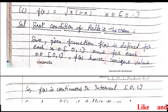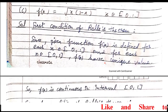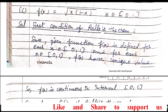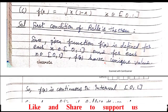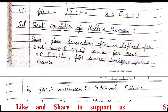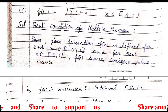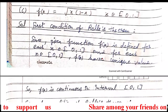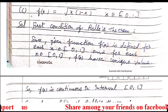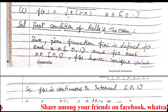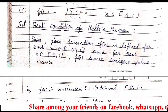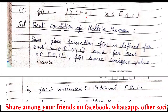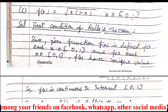Hello everyone. I am going to explain question number 2 of exercise 7.6 from class 12. In this question we have to prove the 12th theorem. In this video I am going to explain question number 2, part C and part D. We will start from part C. f(x) is equal to root of x(1 minus x) where x belongs to 0 to 1.